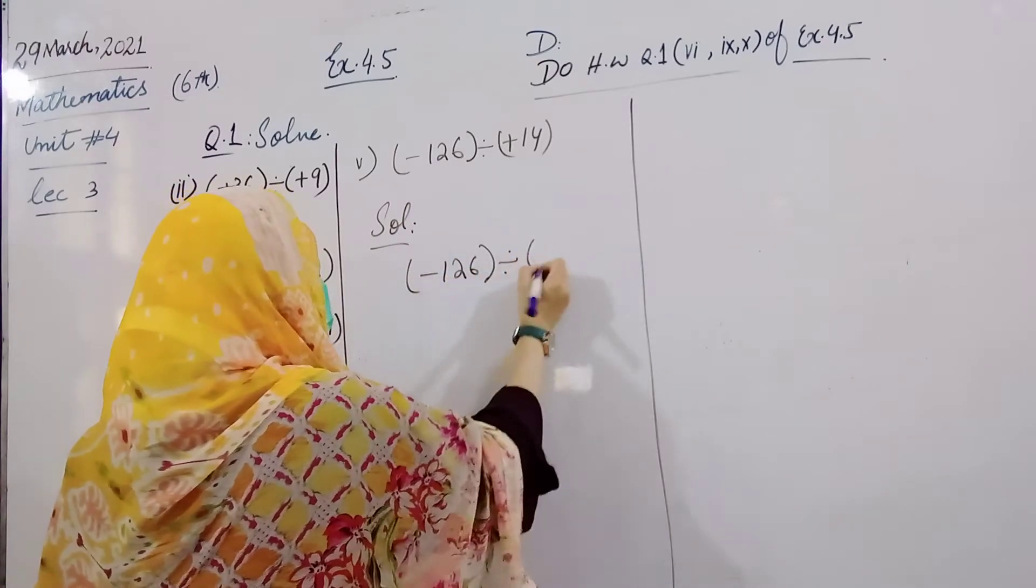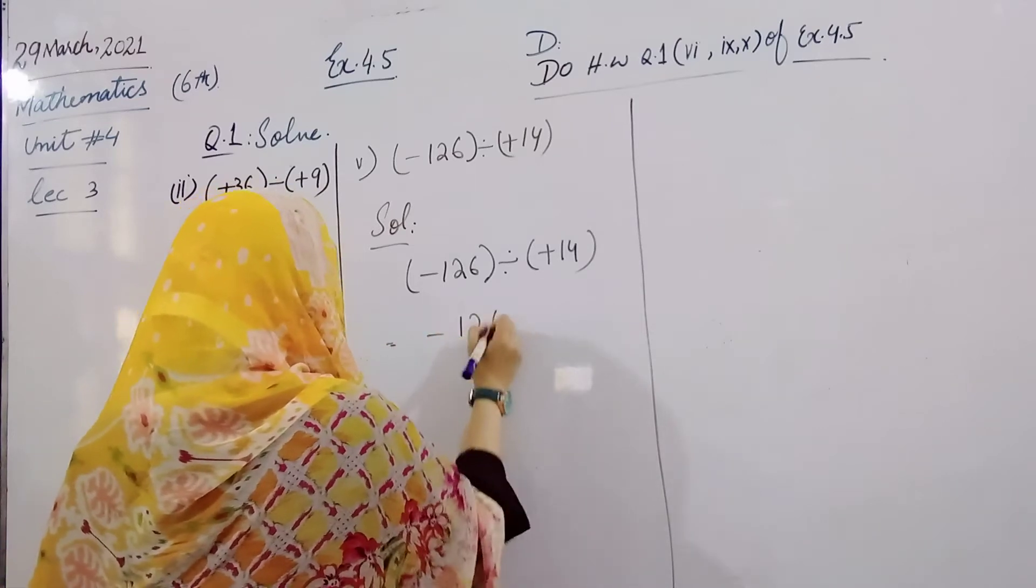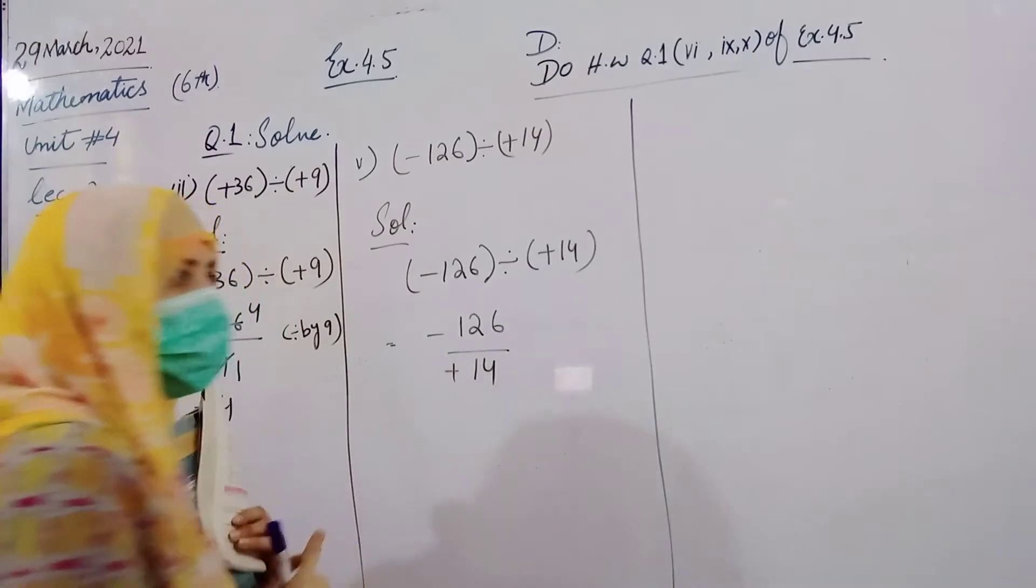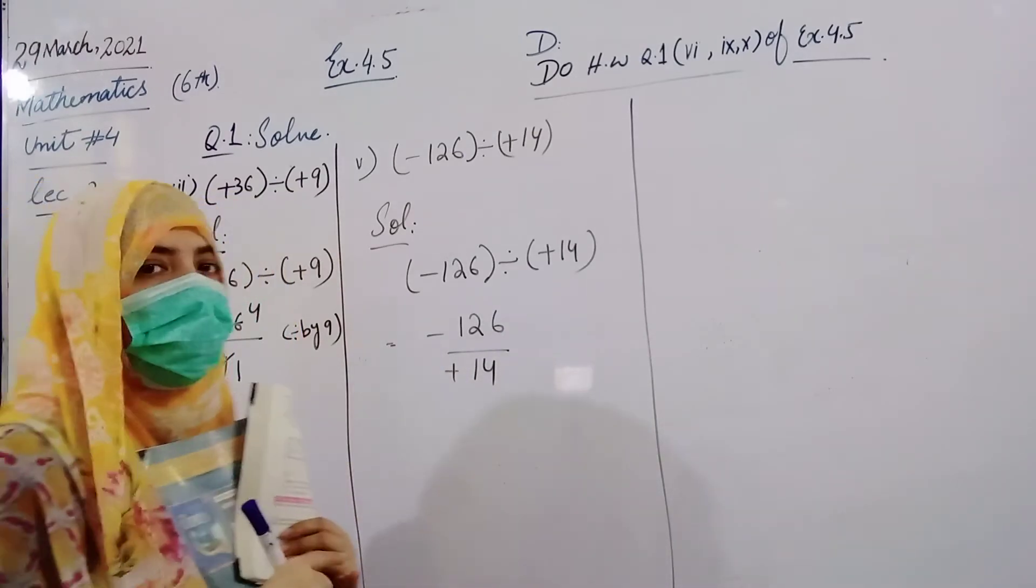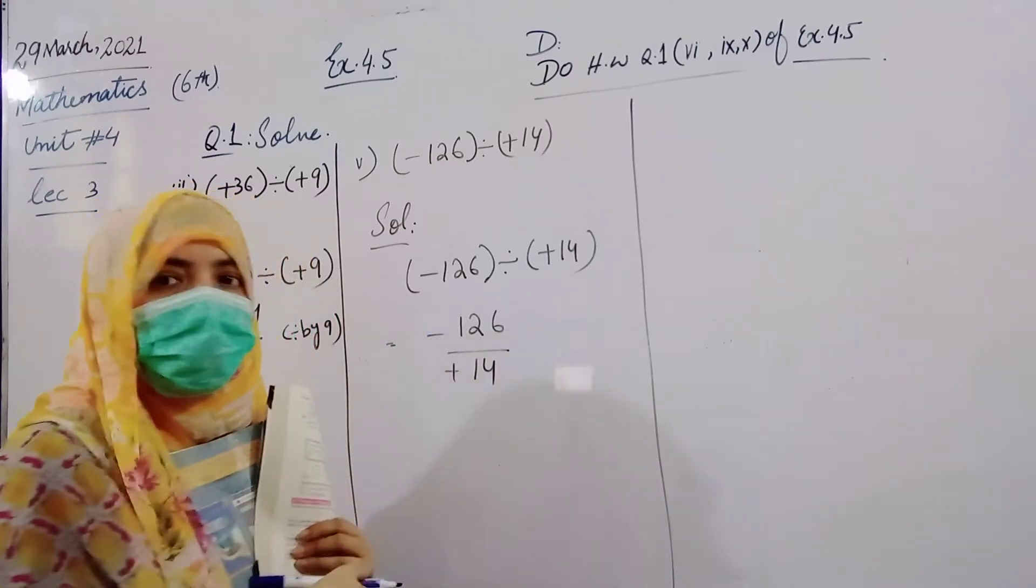Question number 6 is minus 6 divided by plus 14. Here, by various things. Okay, let's do that. You have to divide the numbers here. I will give the numbers, please divide the numbers here.